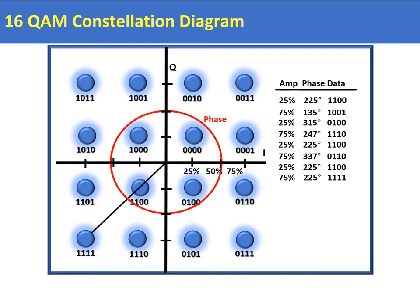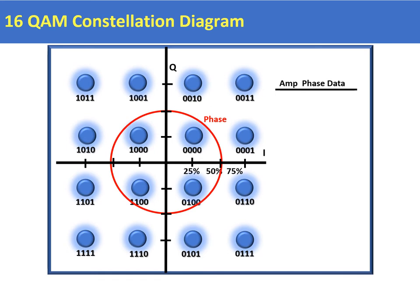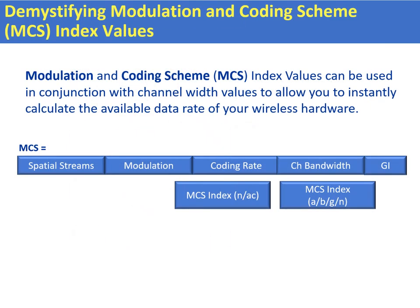Now it's quite difficult to remember all the different permutations for all the different types of QAM and what this represents in throughput in terms of bits per second. So there's a very convenient way of doing this using the MCS Index. Let's take a look at how to correlate the different modulation schemes, the different amount of bandwidth, and the different techniques so that you can predict what your final throughput is going to be. Here is the Modulation and Coding Scheme Index, or MCS.